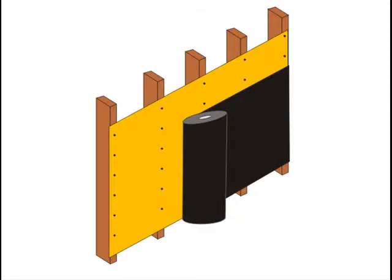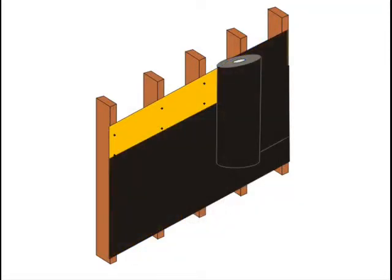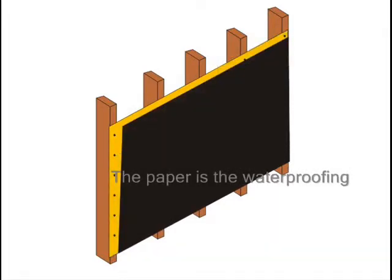A heavy paper is rolled over the sheeting and stapled to the surface. It is this paper that provides the moisture barrier, protecting the wood from becoming wet and damaged over time.